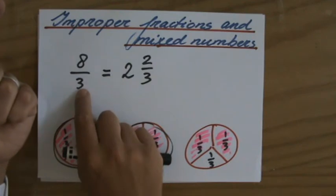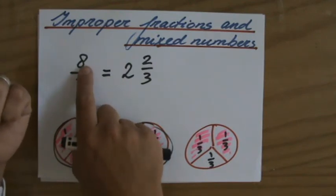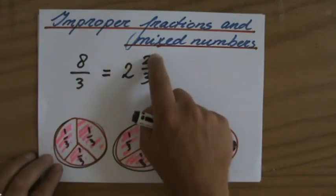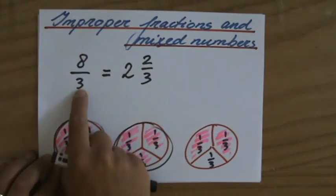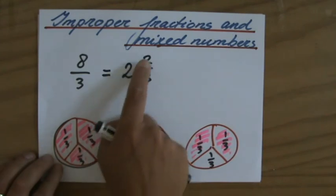Because 3 times 2 is 6. But I have 8 of them. So my remainder is 2, which I still have to divide by 3. So 8 over 3 equals 2 and 2 over 3.